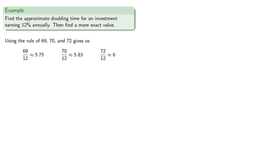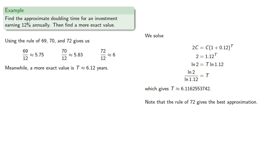Meanwhile, if we want the amount to double, we find 6.12 years. And so our doubling time is about 6.12 years. And notice that the rule of 72 actually gives the best approximation.